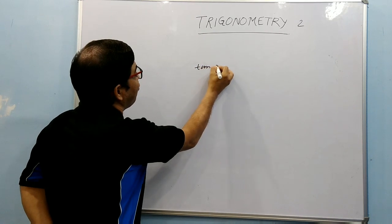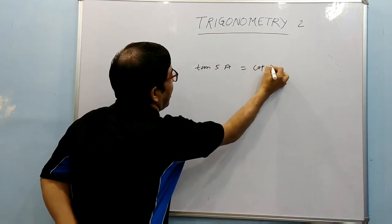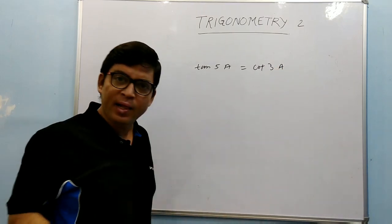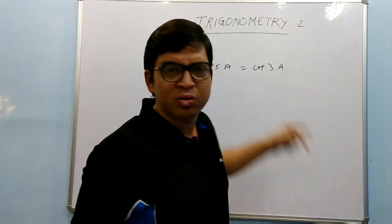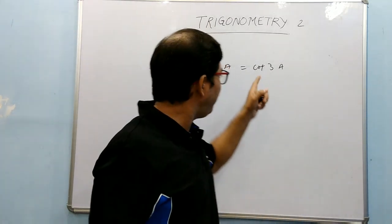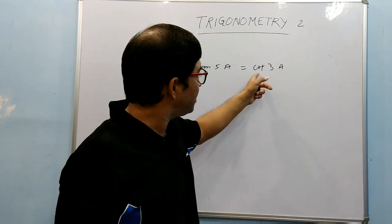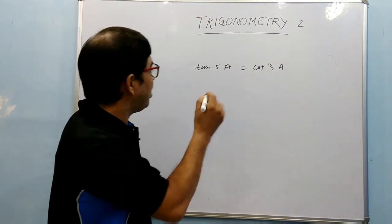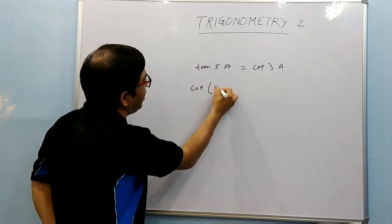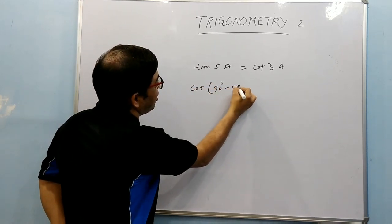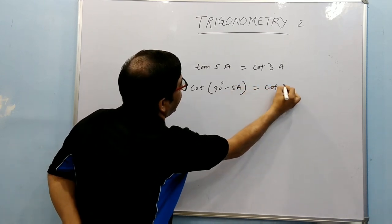One more example. It is given tan 5A = cot 3A. I have to get the value of A. We know that tan will cancel out to tan only. So we need to convert either this tan to cot or this cot to tan. What we will do? If I'm writing tan θ, I have to write cot(90° - 5A), not a problem at all, equals cot 3A.